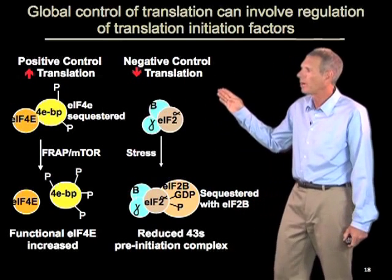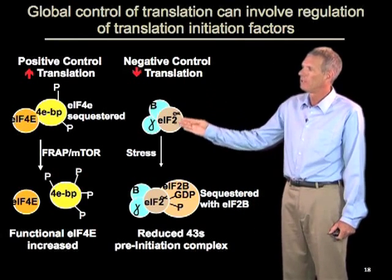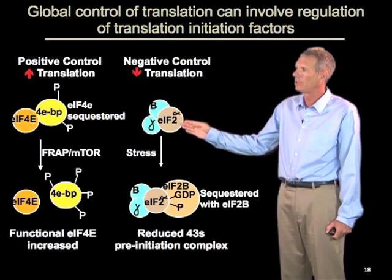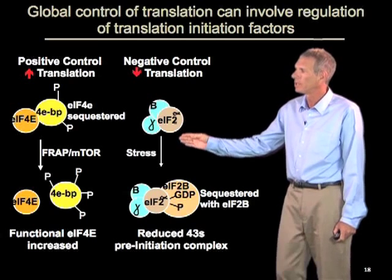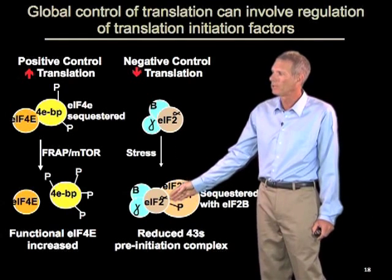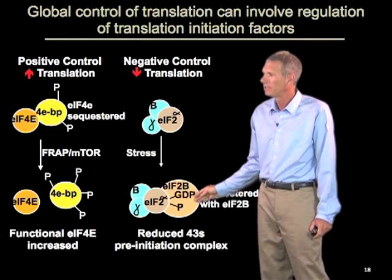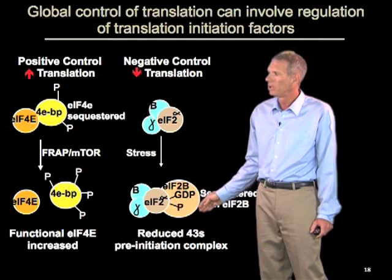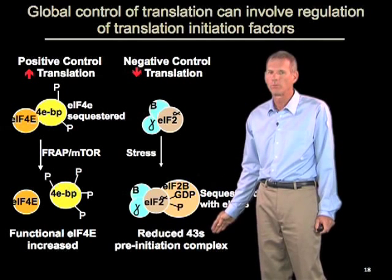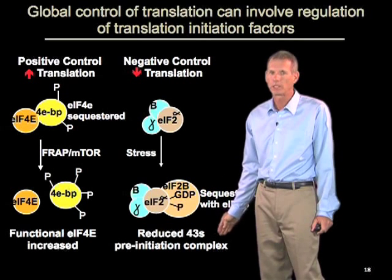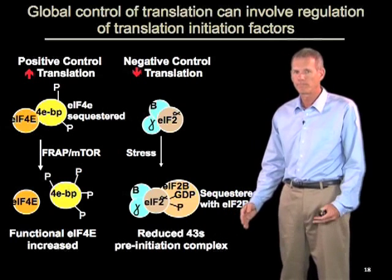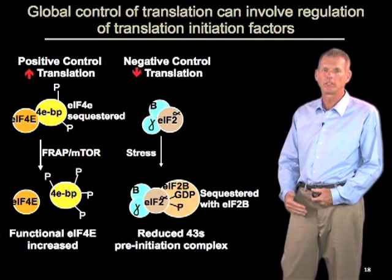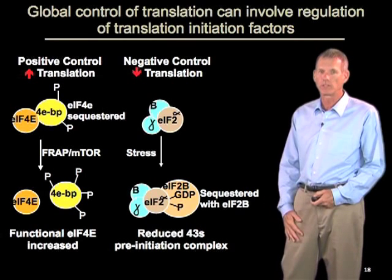Similarly, during a wide variety of stresses, the initiation factor EIF2, which is involved in delivering the initiator tRNA to the ribosome, gets phosphorylated. When phosphorylated, it gets stuck in a GDP-bound form with a translation factor called EIF2B, which reduces the ability to form 43S pre-initiation complexes. So there is global control of translation by the phosphorylation or modification of various key translation factors.